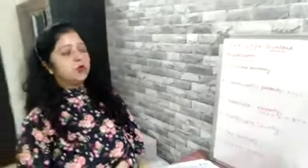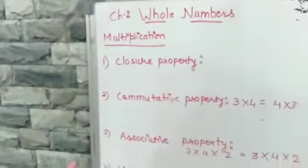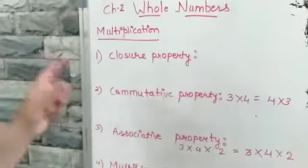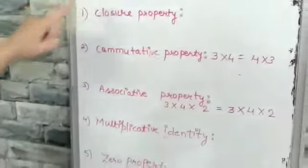Hello everyone. Chapter 2, whole numbers. We have already discussed the properties of addition and subtraction. Today we are going to discuss the properties of multiplication. The same properties we have discussed — now we have to find whether these properties will be applicable on multiplication or not.